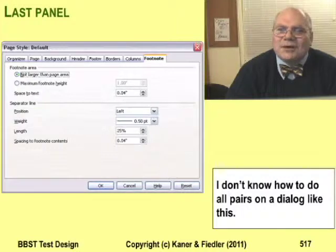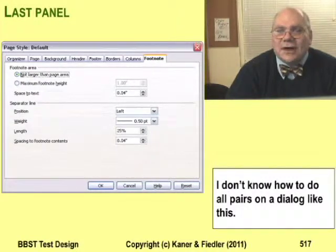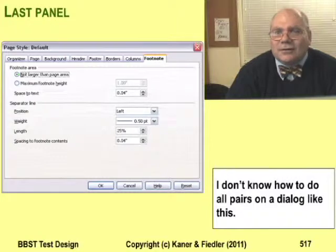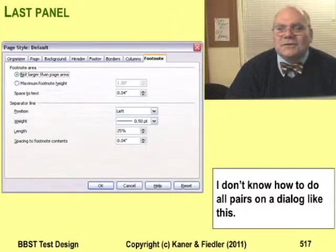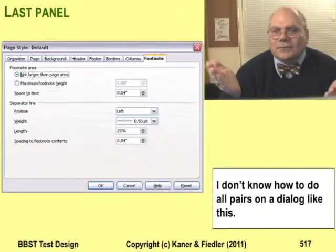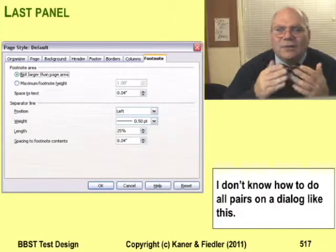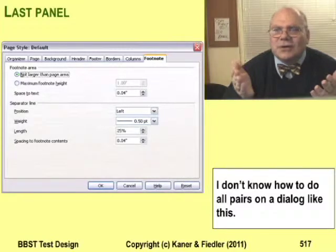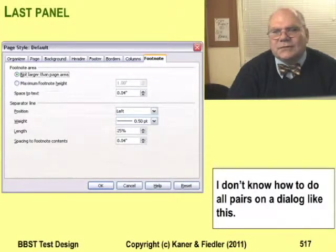I want you to think about organizing this into an all pairs test. I don't actually know how to count how many variables there are here, because the numbers vary. For example, each column brings its own variables, and all the variables constrain each other.